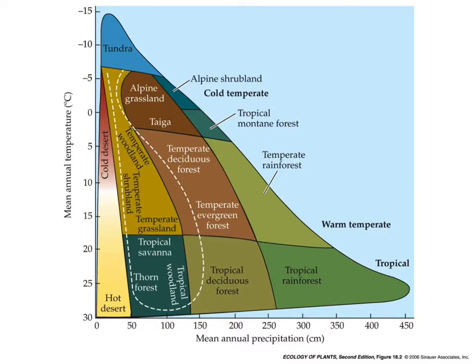Biomes are determined by the combination of mean annual temperature and precipitation. On this graph, note that the axes are set up with precipitation going from zero to higher in the normal direction, but temperature runs from higher to lower. So the lowest, driest place of all is the tundra in the upper left part, and the warmest and wettest is the tropical rainforest.